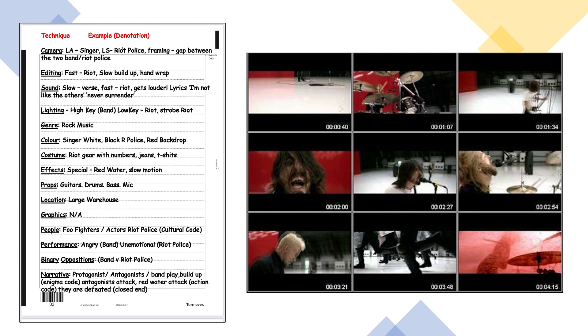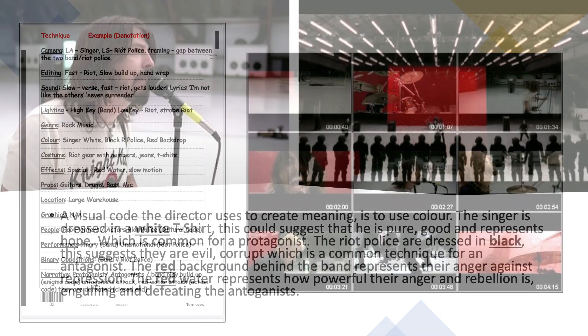So those are my denotations, and the idea is I will take those and then work out the connotations. On the next slide I'll show you one brief example in terms of colour and the connotations.